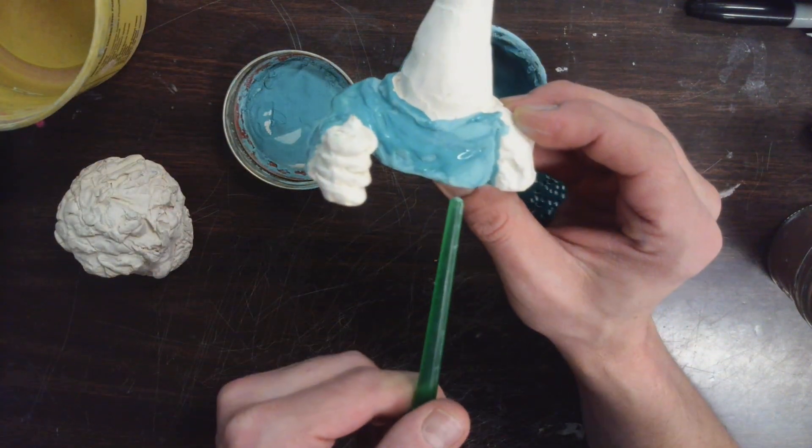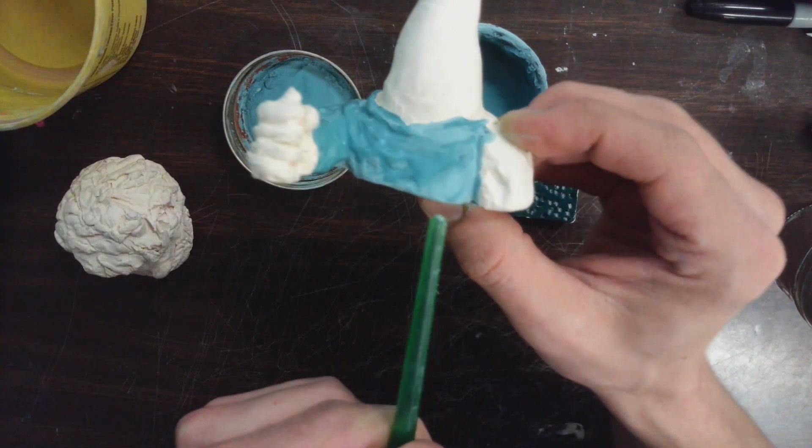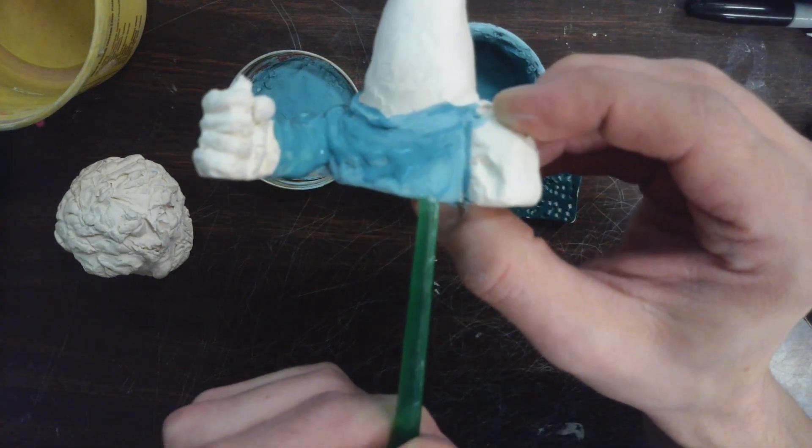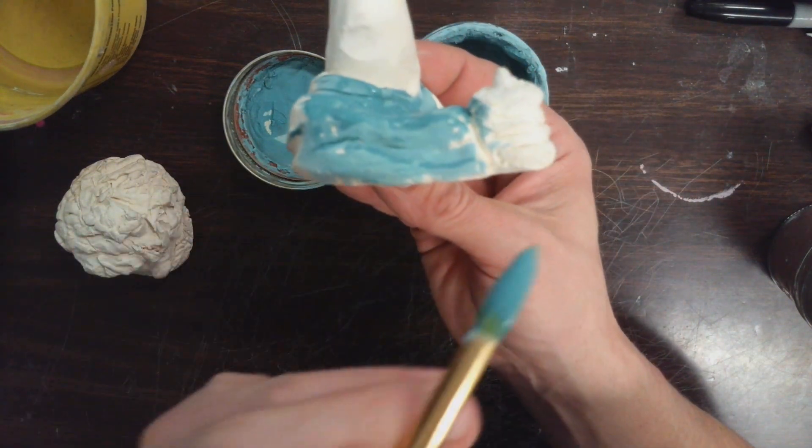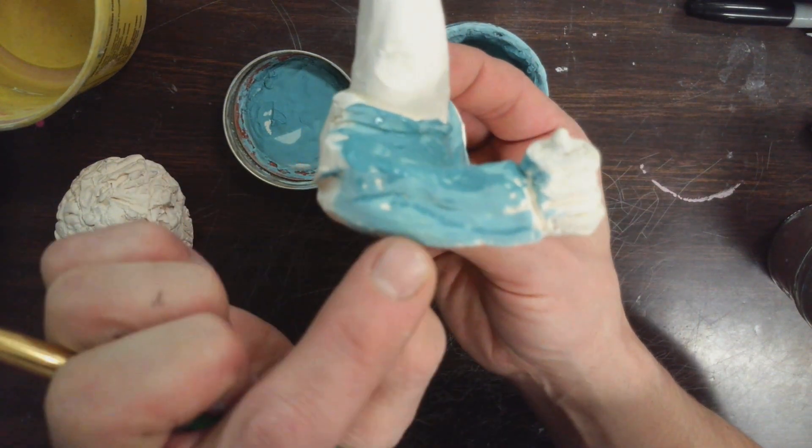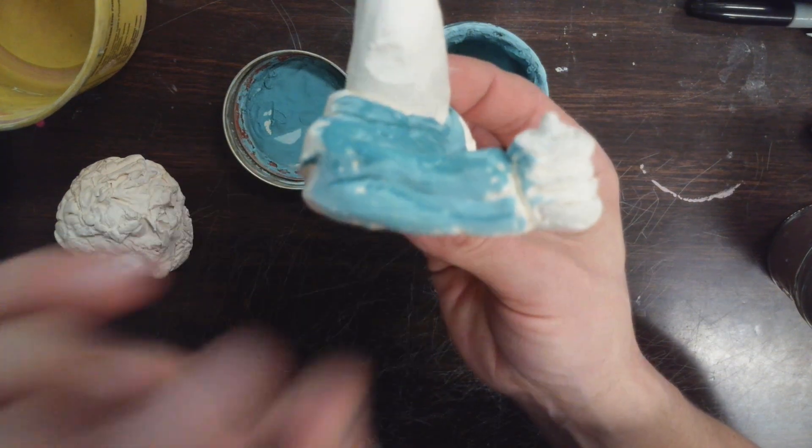But you want to take a second to look closely to see if you can see any white of the clay showing through. If I come over to this side where I just did a real quick brushstroke, you can see I got a little bit of white showing through there.